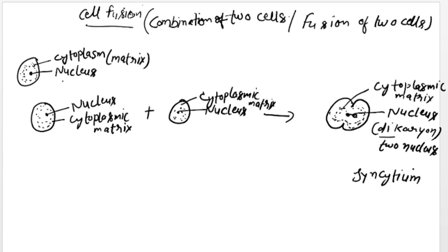In which two nucleus are combined, the term used for the combination of two or more nucleus is called syncytium.